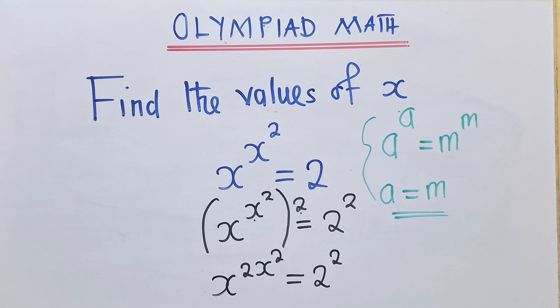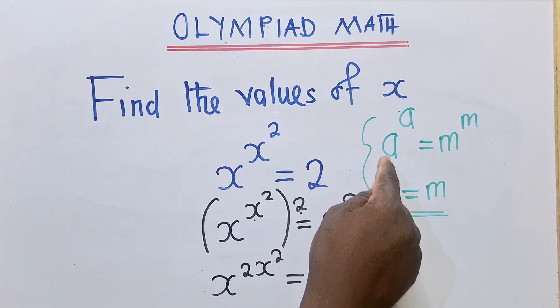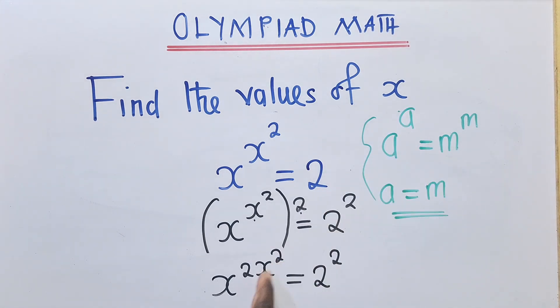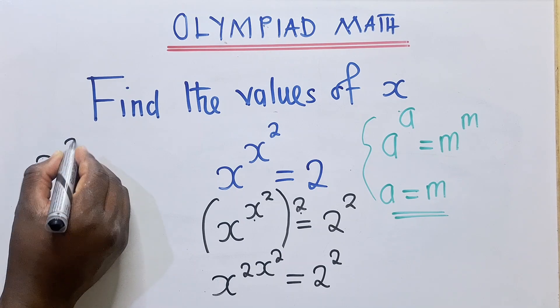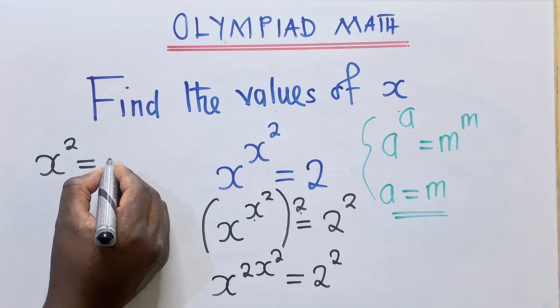So if you're able to see, we've got x power 2, x power 2, here 2 power 2. So this side, same thing, which is here. This side, same thing, which is here. We can now say, or happily say, x² is equal to 2, like we did here.